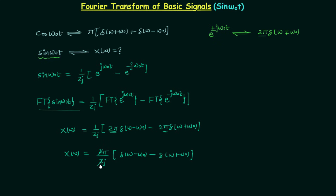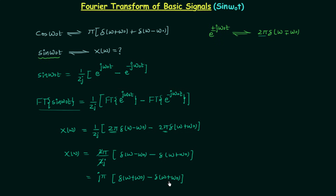The 2 and 2 will cancel out, so we have π/j multiplied by [δ(ω − ω₀) − δ(ω + ω₀)]. Multiplying j in the numerator and denominator, we get jπ/j², and since j² equals −1, we get −jπ. Taking the minus inside the bracket gives us jπ multiplied by [δ(ω + ω₀) − δ(ω − ω₀)]. So this is the Fourier transform of sin(ω₀t).